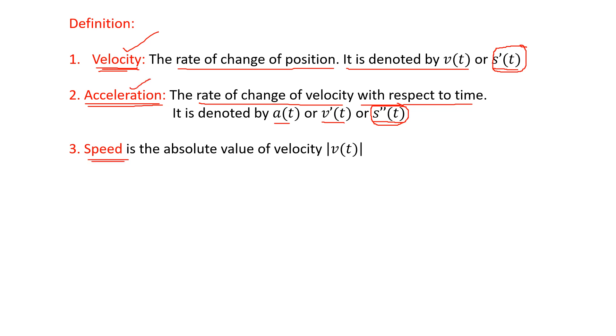Speed — what is speed? Speed is nothing but the absolute value of the velocity function. It is defined by |v(t)|.